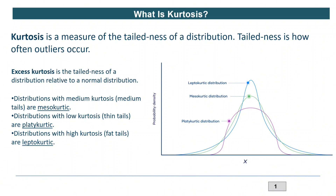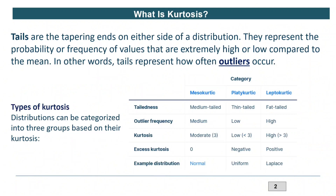Now let's understand a bit more about how kurtosis values are calculated. When you decide whether your distribution is mesokurtic, platokurtic, or leptokurtic, what is your inference? Even though the term kurtosis talks about the peak of your curve, the statistical calculation of kurtosis is more about the tail of your distribution — the two ends.